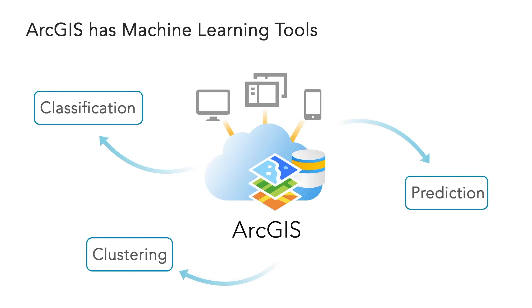ArcGIS actually has a surprising amount of machine learning tools, many of which people didn't even realize were machine learning tools and have been there for quite a few years. We think about problems in broader categories of classification, prediction, and clustering — and we're going to touch on all of these today. Alberto will talk about prediction and classification using forest-based classification and regression, and I'll start by talking about clustering. We're showing you just two tools, but there are tons of tools in these categories, and we'll point you to more resources at the end.